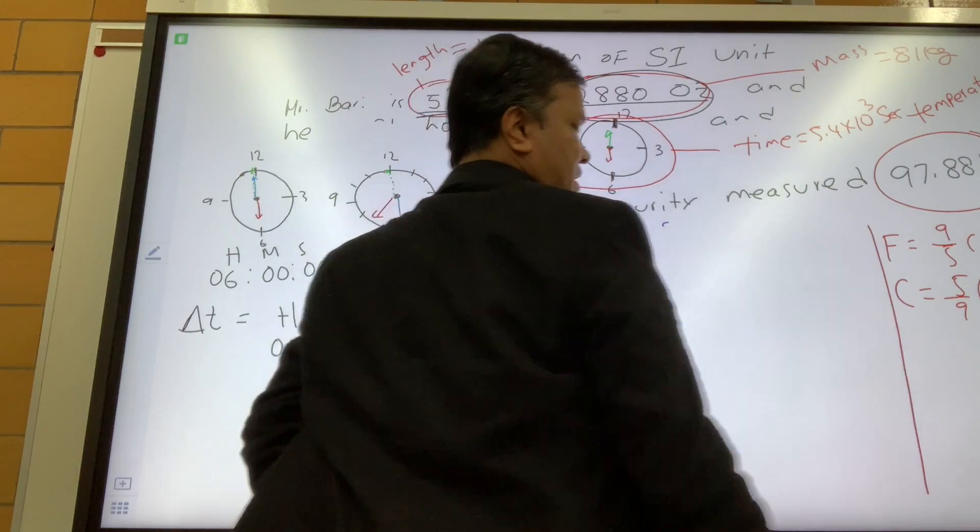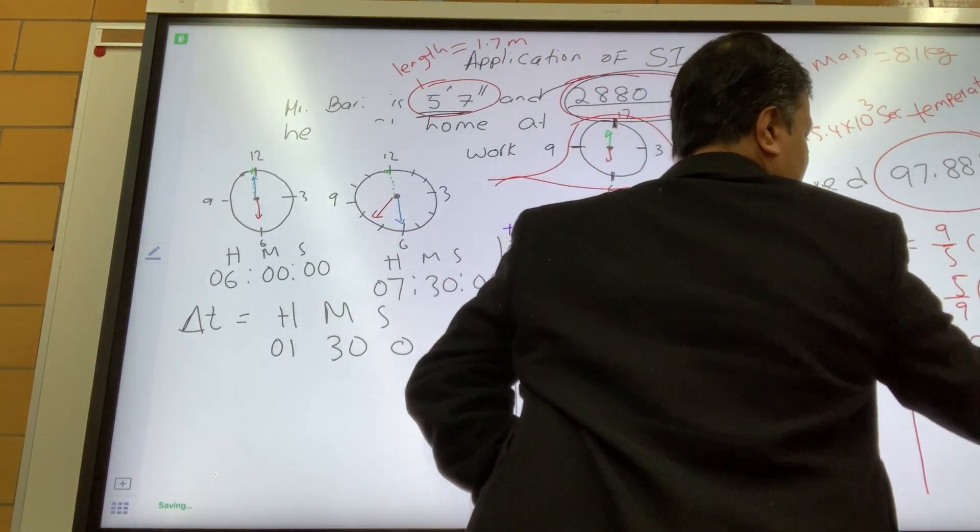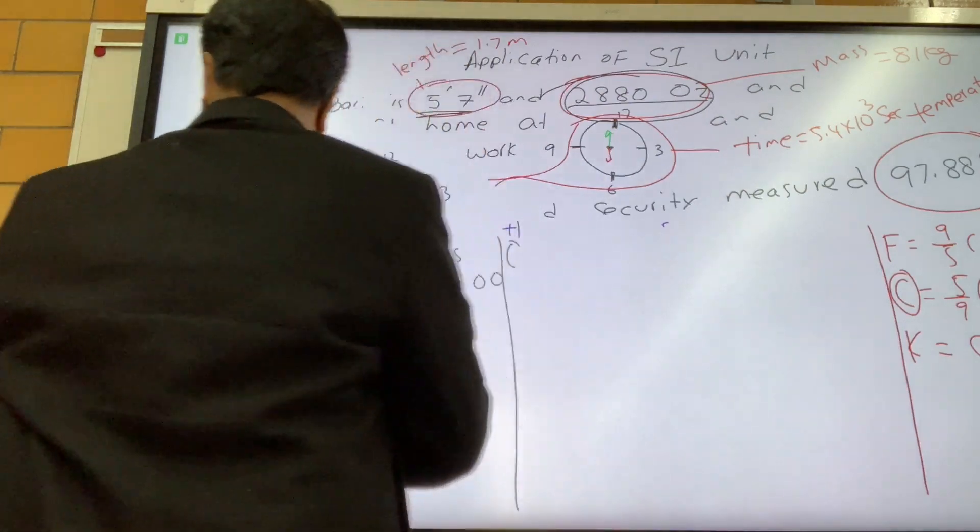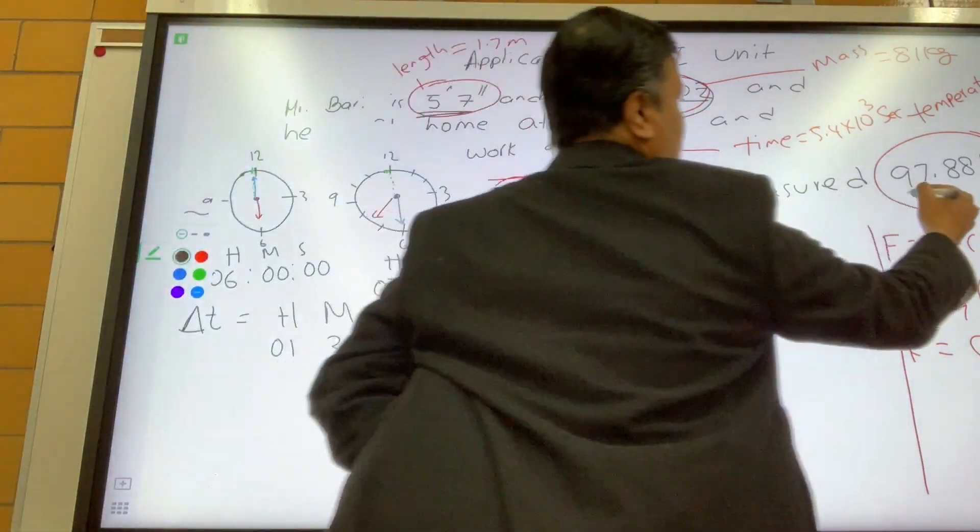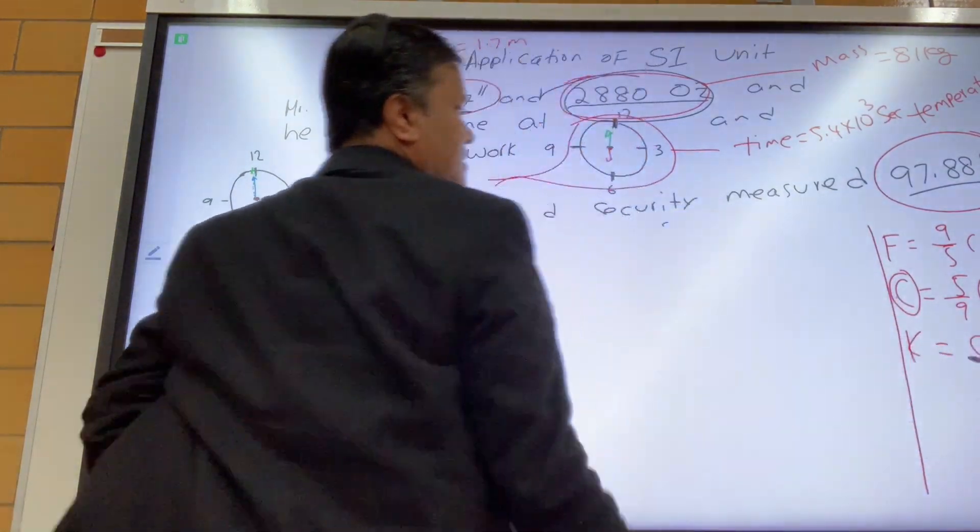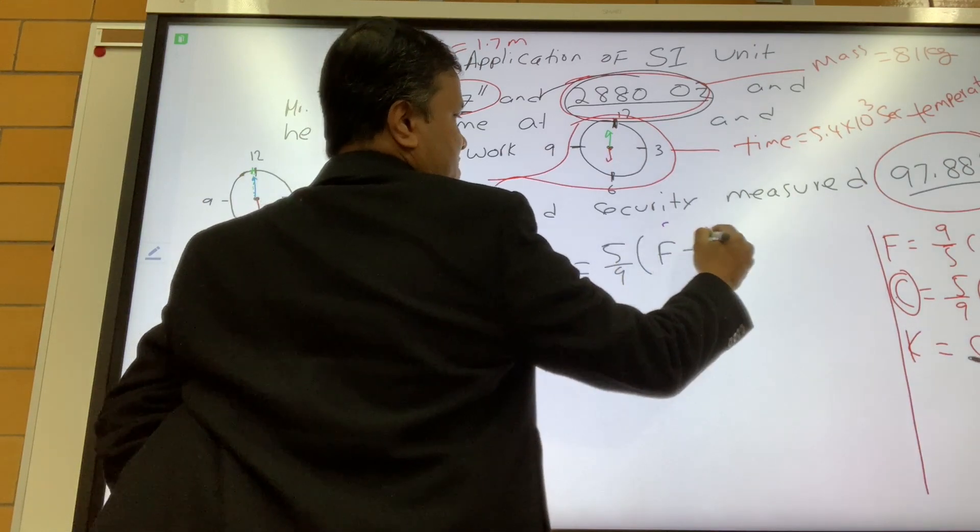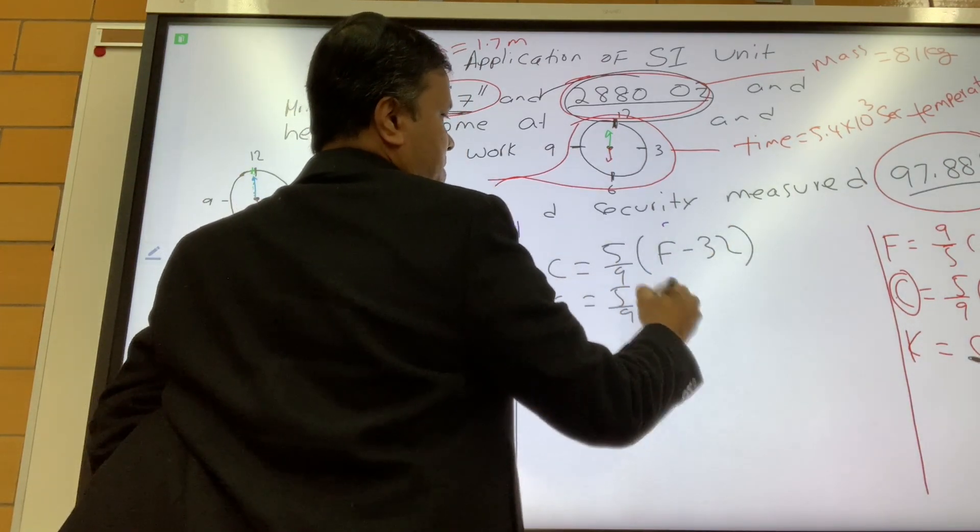And then now let me give you C. C is equal to 5 over 9 parenthesis F minus 32. And then finally K, K is equal to C plus 273. All right, now let's convert Fahrenheit to Celsius first.